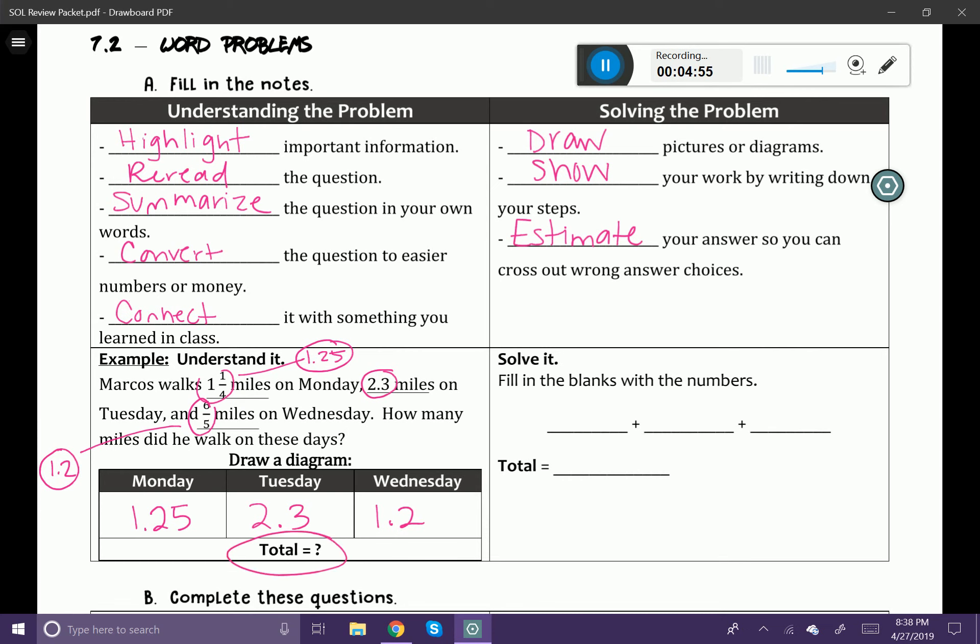So let's go ahead and solve it. Let's take these numbers and fill in the blanks with the numbers. 1.25 plus 2.3 plus 1.2. So what I did there is I showed all my steps. I'm adding these numbers together. And now I can even go ahead and estimate it. If I look at that, if I look at just the whole numbers, I have a one, a two, and a one. So that's about four.